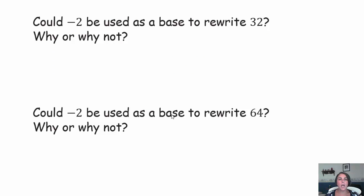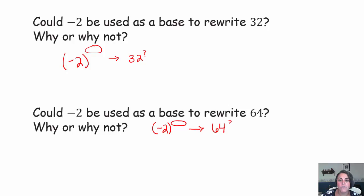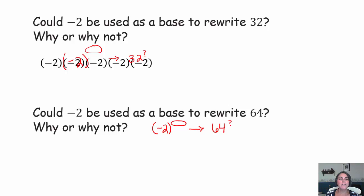Could negative 2 be used as a base to rewrite positive 32? Is there a way to start with negative 2 as a base raised to some exponent and end up with a positive 32? Take a minute, pause the video, try it out, and come on back. I know that 2 to the fifth power is 32, so I'm hoping negative 2 to the fifth power is also 32. I pair up my factors: negative 2 times negative 2, negative 2 times negative 2, and then I have this extra factor of negative 2.